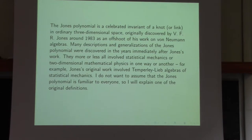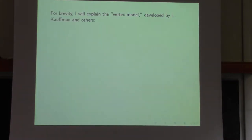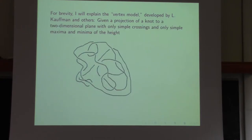I don't want to assume you're all familiar with the Jones polynomial, so I'm going to briefly explain one of the original definitions. For brevity, the one I'll explain is the vertex model. In the vertex model, the Jones polynomial is computed by a finite discrete version of statistical mechanics.